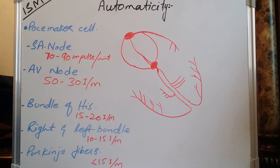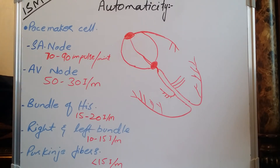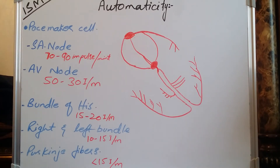These are the automaticity rates of the specialized cells that generate impulses. Beyond this, we will discuss how automaticity is produced and what conditions cause the impulse-generating ability of the SA node and AV node to increase or decrease.